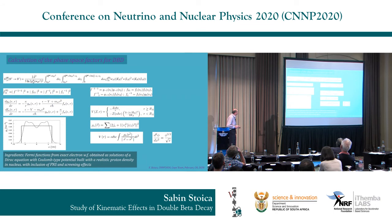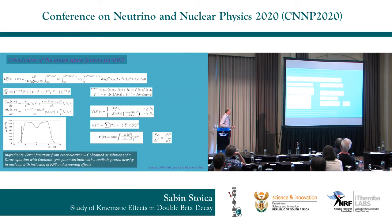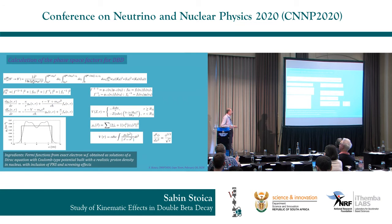Our method consists in solving the Dirac equation, and the Fermi functions are constructed from the radial solutions of the Dirac functions. We took into account the finite nuclear size and the screening effect by solving the Thomas-Fermi equation. The procedure is to obtain the solution of the Thomas-Fermi equation and multiply the classical potential with this function. In addition, we used a Coulomb-type potential built from a more realistic redistribution of protons in the nucleus.